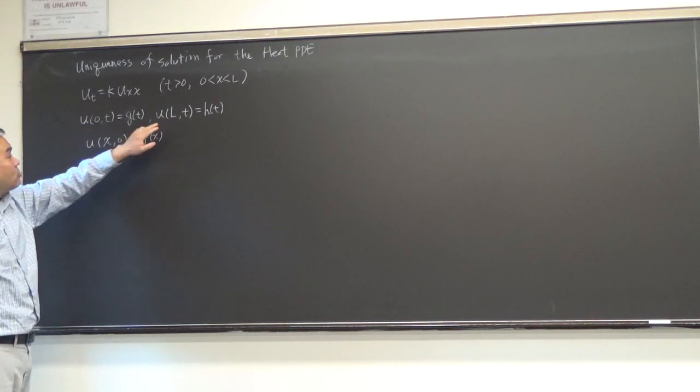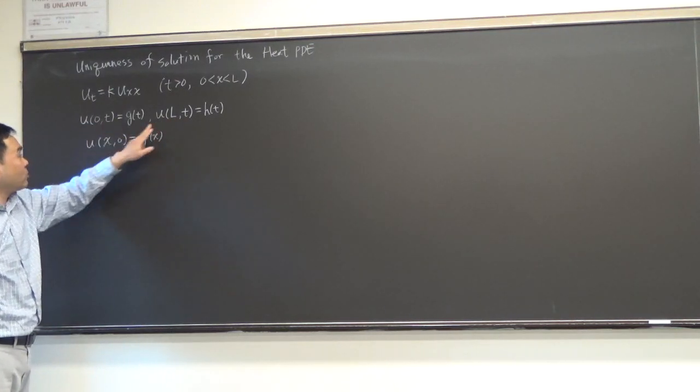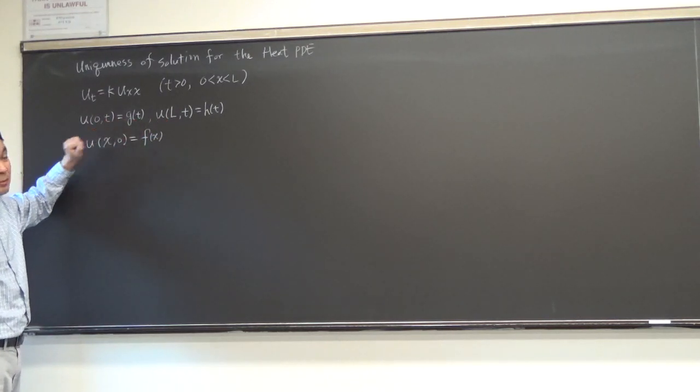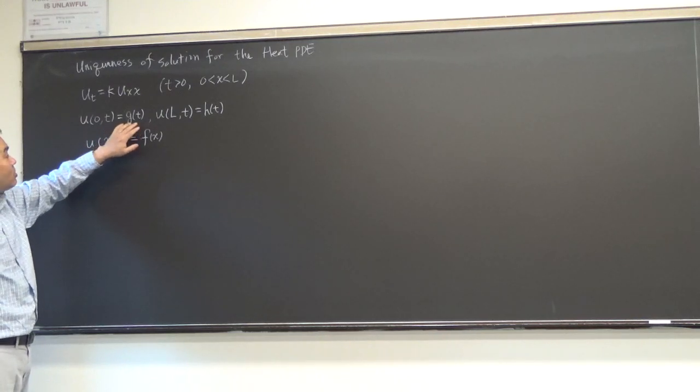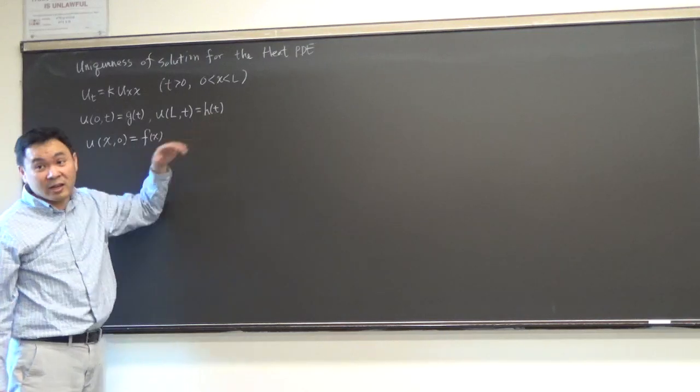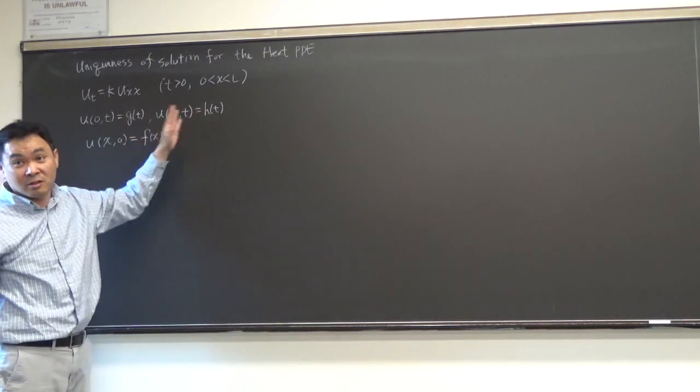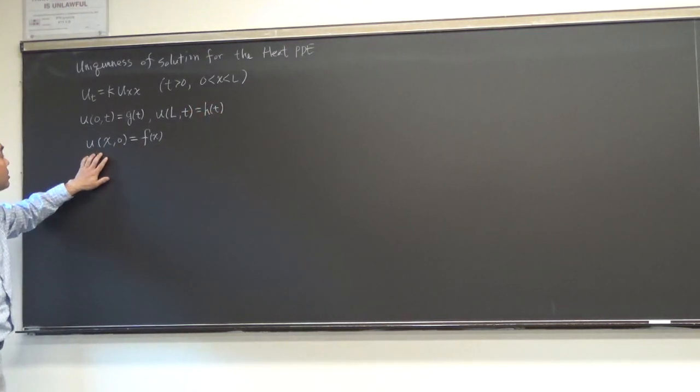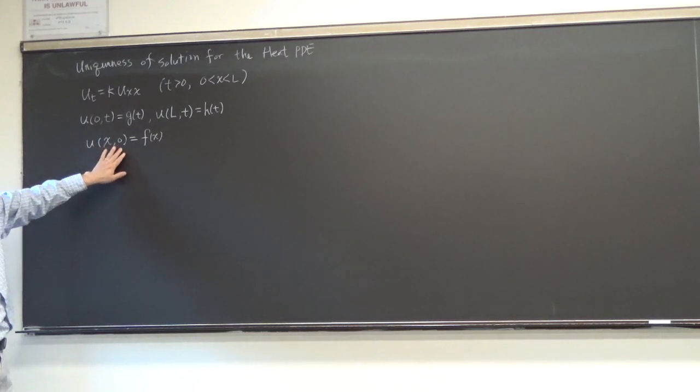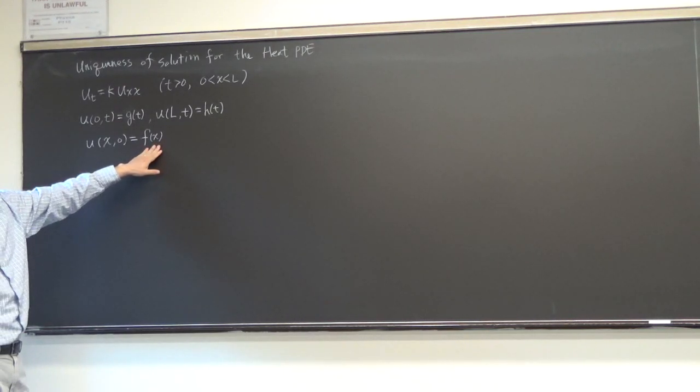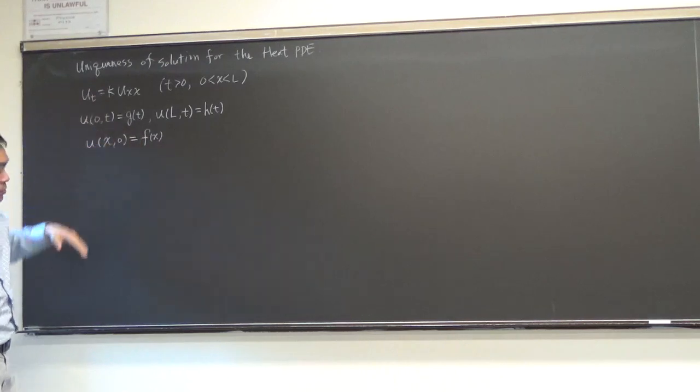And then if you plug in 0 into x or L into x, you end up with a function of T only because T is still there, right? Now we only did the case when both endpoints were fixed at 0, but today I also want to show you what happens when these are some more complicated ones. And then you have u(x,0) as f(x), which is when time T equals 0, that's the initial state of the heat distribution on the rod.